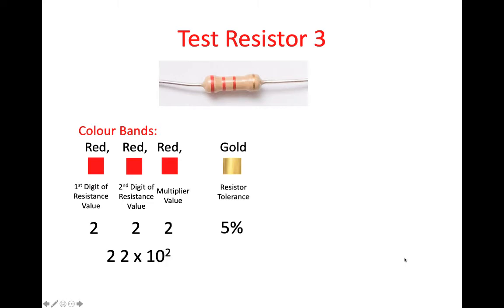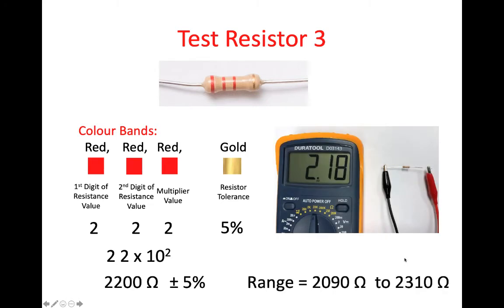Here we have 22 multiplied by 10 to the power of 2, plus or minus 5%, which is 2.2 kilohms, or 2,200 ohms, plus or minus 5%. So this gives us a range of 2,090 to 2,310 ohms. When we measured this, we got 2.18 kilohms, which is in that range.